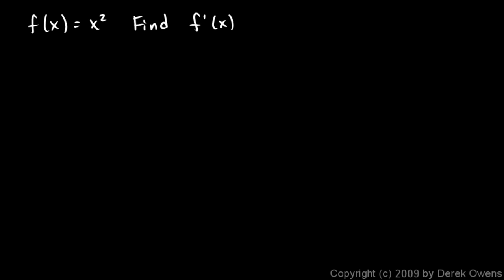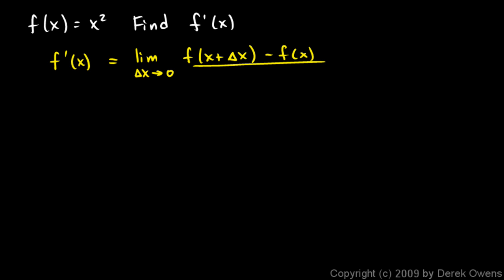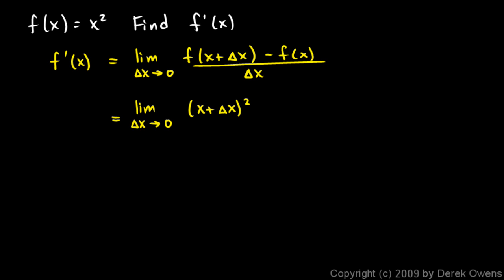Let's do a simple one: f(x) = x squared. Find f prime of x. f prime of x will be the limit as Δx approaches 0 of [f(x + Δx) − f(x)] / Δx. That's the definition of a derivative. Applying that to this function: the limit as Δx approaches 0 of [(x + Δx)² − x²] / Δx.